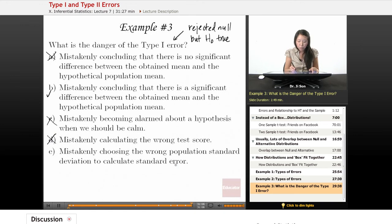Mistakenly choosing the wrong population standard deviation to calculate standard error. That's not it either. These two are just regular old mistakes or errors in calculation. They're not type 1 and 2 errors of hypothesis testing.